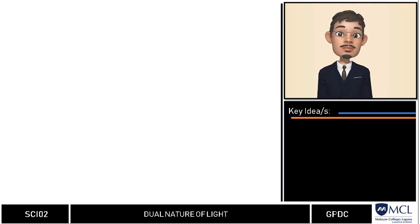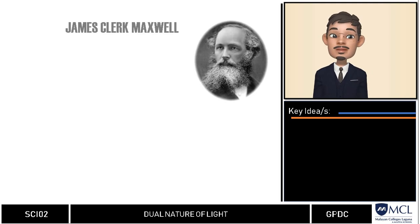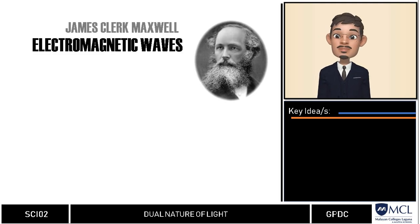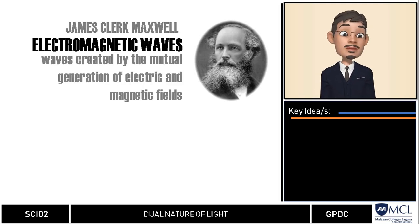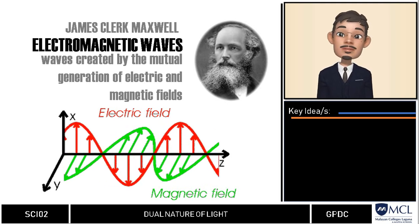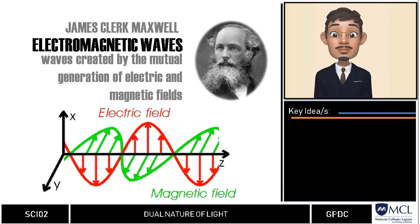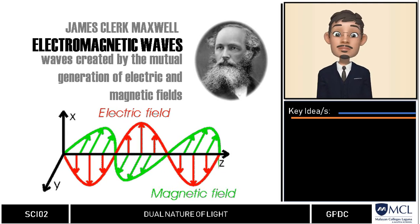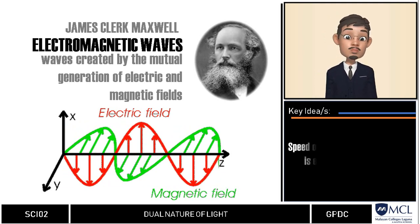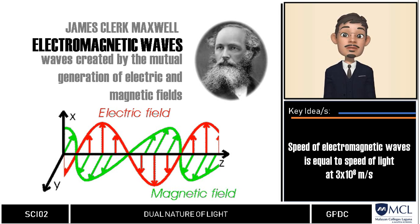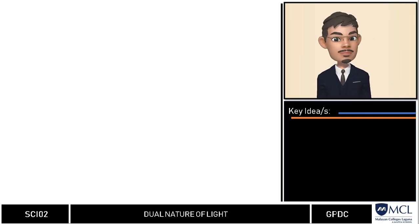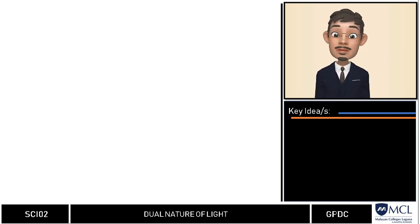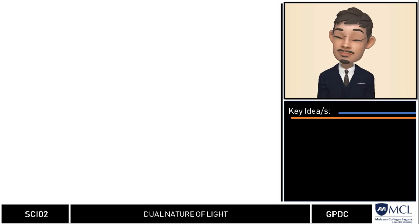Then came James Clerk Maxwell, who concluded that light is an electromagnetic wave — a wave created by the mutual generation of electric and magnetic fields — enabling it to travel even without a medium, just like in a vacuum. He calculated the speed of the electromagnetic wave and it matched the known speed of light in vacuum: 3 × 10⁸ meters per second. While Maxwell's findings were proven true, this still did not resolve the issue of whether light is a wave or a particle.